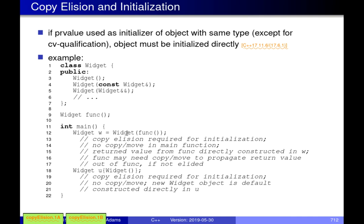If copy elision is required, we get one kind of behavior; otherwise, we get different behavior. Looking at the various uses of 'funk' in the main function: the rule is that if you're initializing an object and the initializer is a prvalue, the copy must be elided — it's mandatory. This is why we care about splitting rvalues into prvalues and xvalues — prvalues are the cases where copy elision is mandatory.